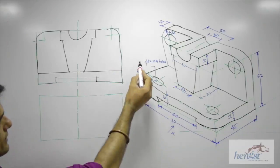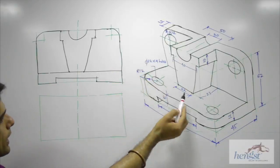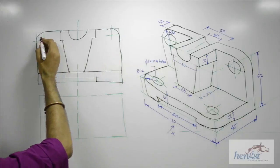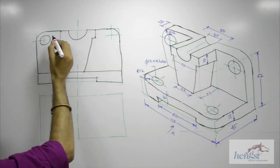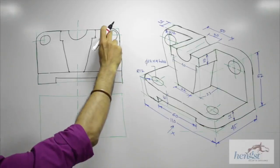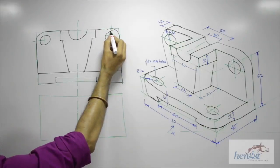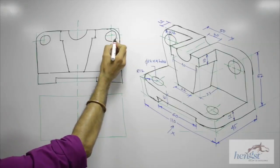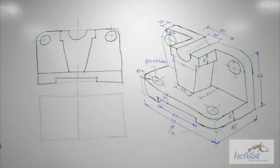Then we have diameter 12, 4 bolts: 1, 2, 3, 4. So this thing we can draw with radius 6. So we are done with front view except these two dotted lines.